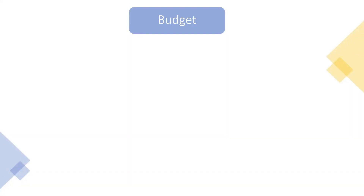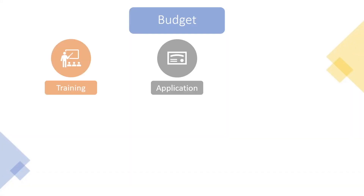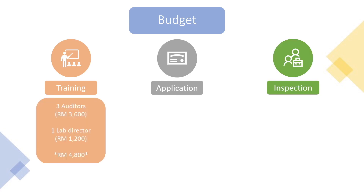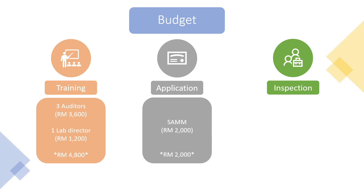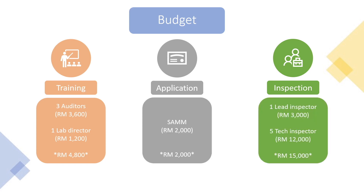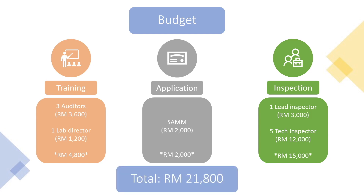For the budget, we'll be requesting funding in three categories: training, application, and inspection. Under training, we'll need around RM4,800. For the application, we'll need RM2,000 to send the application form to SAMM. For inspection, we'll need RM15,000 for all three inspections by SAMM inspectors. All in all, the total comes to RM31,800. We hope you'll provide us with the funding so we can proceed with the accreditation process.